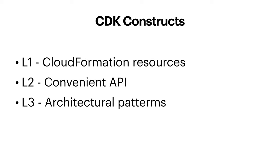There are three layers of CDK constructs. The first layer is a construct that mimics exactly the CloudFormation resource itself without any abstraction — in TypeScript or Python, a class with the same properties as the CloudFormation resource. In layer two, we have a more convenient API with sensible defaults and more abstraction that lets you easily define more complex constructs and sets of resources.